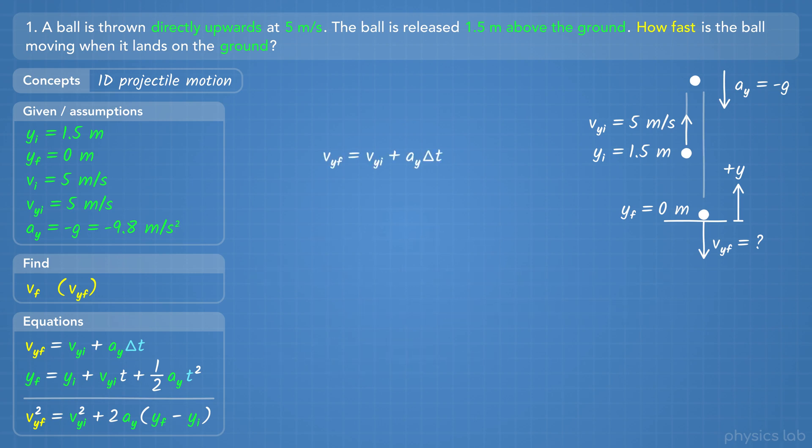Now let's solve this using the other equations. We know the initial velocity and the acceleration, but we need to know the time the ball hits the ground, which we can find using this equation. The final y position is 0 meters, the initial position is 1.5 meters, the initial velocity is 5 m per second, and the acceleration is negative 9.8 m per second squared.